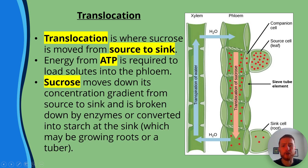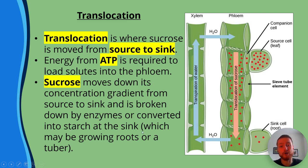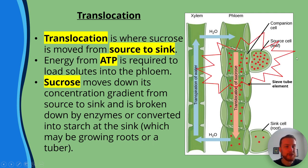Sucrose moves down its concentration gradient from source to sink and is broken down by enzymes or converted into starch at the sink. The sink could be growing roots or a tuber such as a potato.